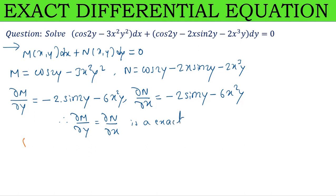The solution is ∫M dx + ∫N(y) dy = C. So integrate cos 2y - 3x²y² with respect to x, plus